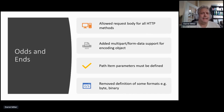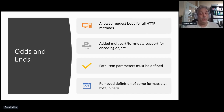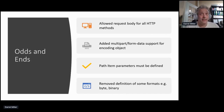We closed some gaps — there was an issue with path item parameters where we didn't actually say you have to define those path item parameters. We've also removed some definitions of certain types and formats that we borrowed from JSON Schema, such as byte and binary format. We've taken those out because we are deferring more and more of these modeling things specifically to JSON Schema and staying out of the way of having opinions in that area.